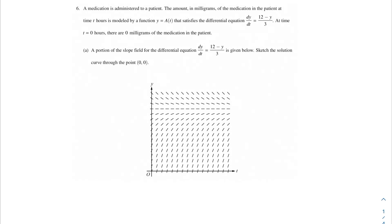Welcome back to another video of my AP Calc Champions. In this problem, we're going to be talking about medication. A medication is administered to a patient. The amount in milligrams of the medication in the patient at time t hours is modeled by the function y equals a of t, that satisfies the differential equation dy/dt = (12 - y)/3. At time t equals 0 hours, there are 0 milligrams of the medication in the patient.